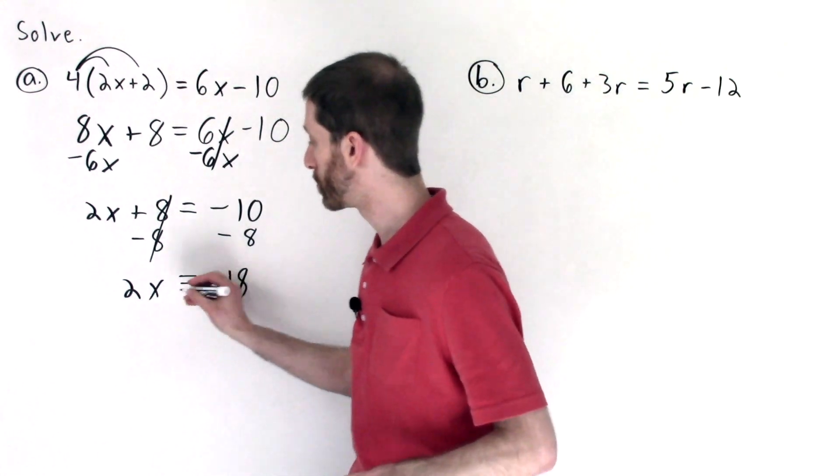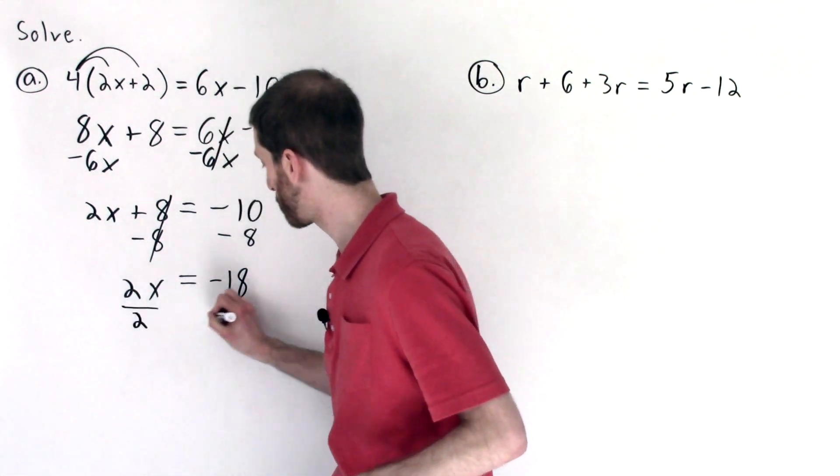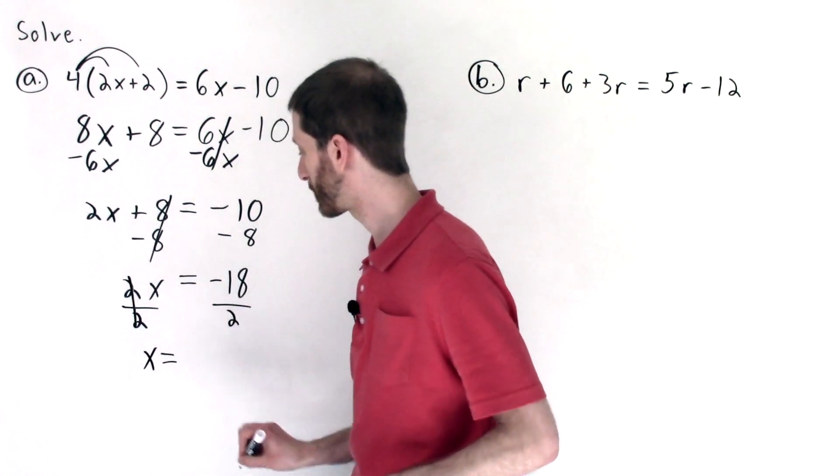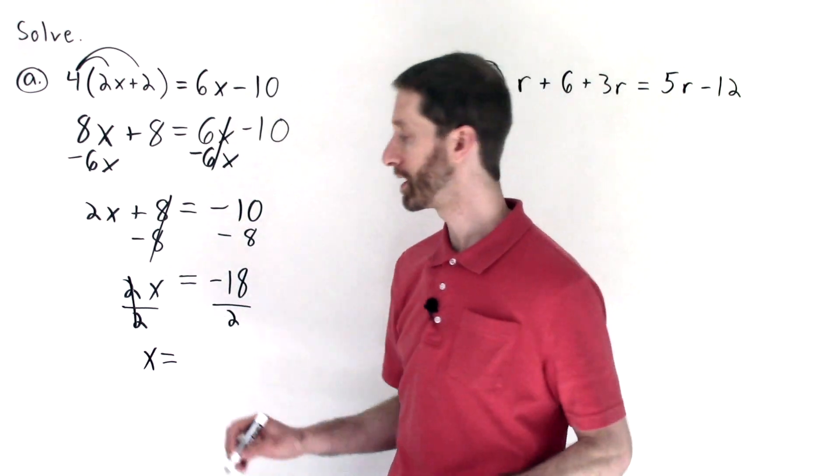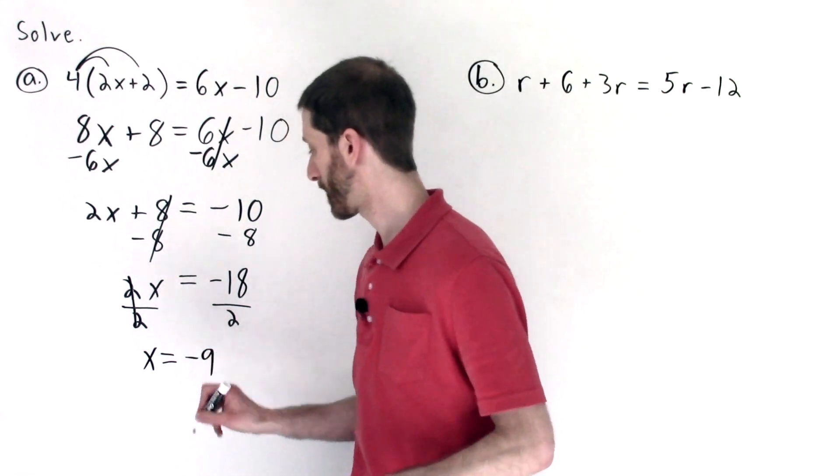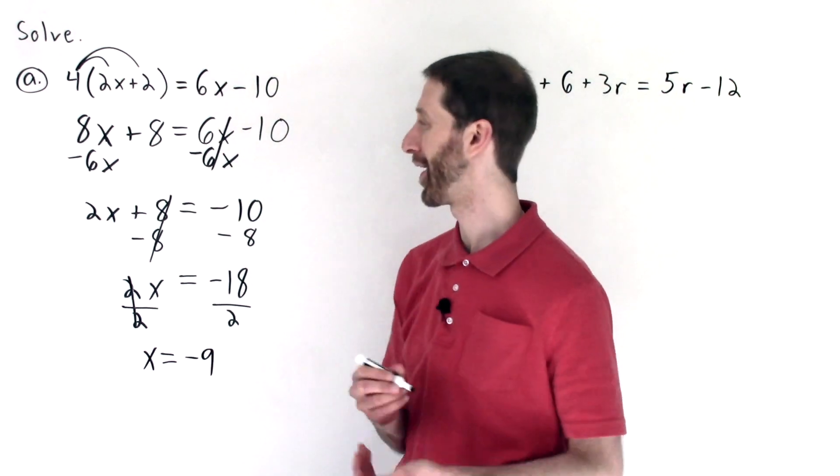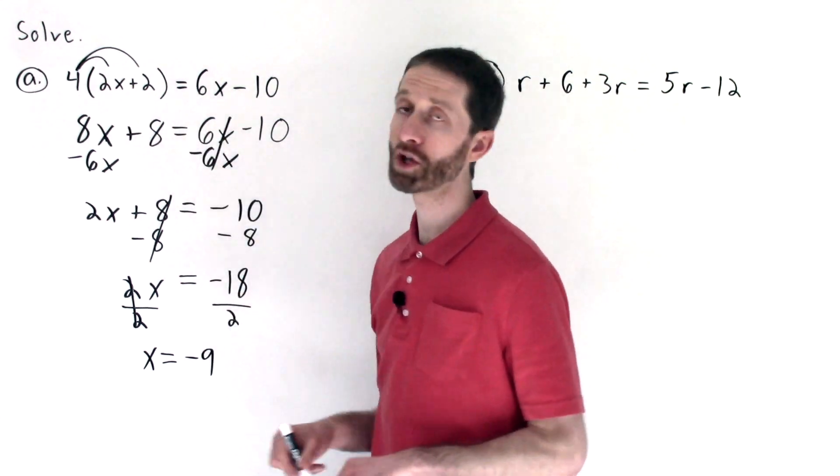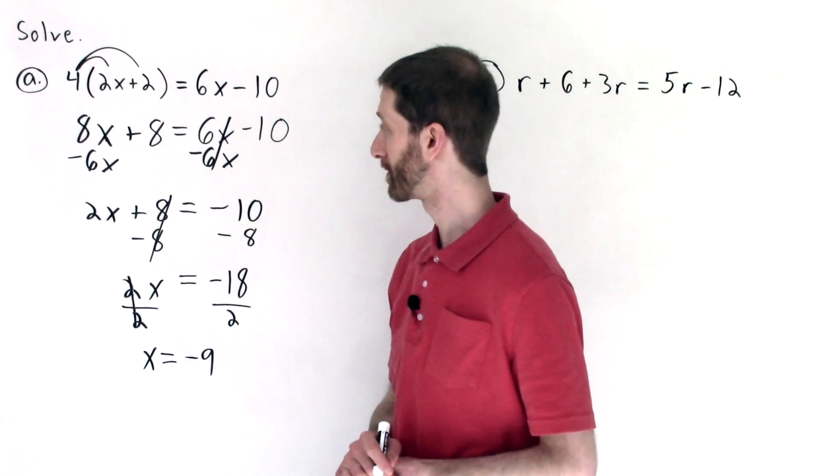Now we undo 2 times x by dividing by 2. The 2's will cancel out, confirming that we've isolated x. And then negative 18 divided by 2 is negative 9. That's a beautiful thing right there. Awesome. All right, so that's our answer. If you plug it into both x terms, you will see that we get a true statement. Very cool.